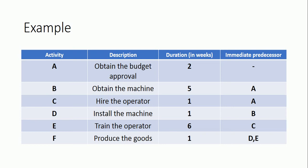Activity D — install the machine — requires one week, and Activity B (obtain the machine) must be completed first. Activity E — train the operator — requires six weeks, and Activity C (hire the operator) must be completed first. Finally, Activity F — produce the goods — requires one week, and both Activity D (install the machine) and Activity E (train the operator) must be completed before it can begin.